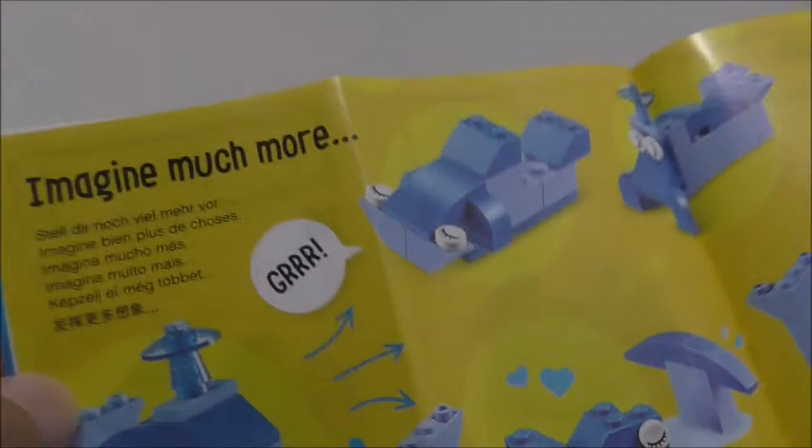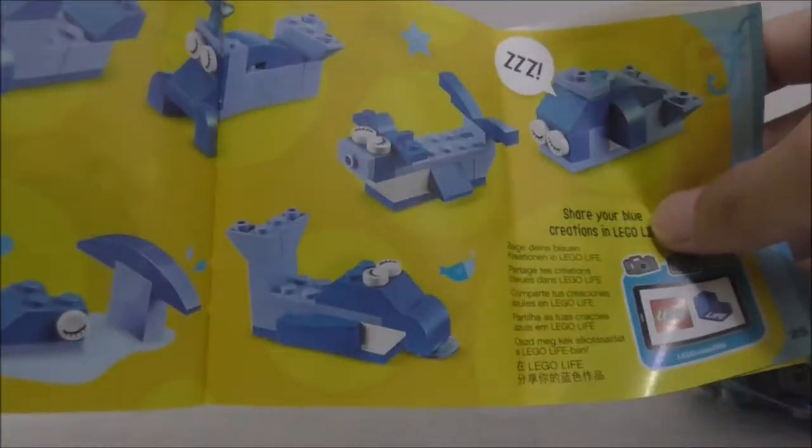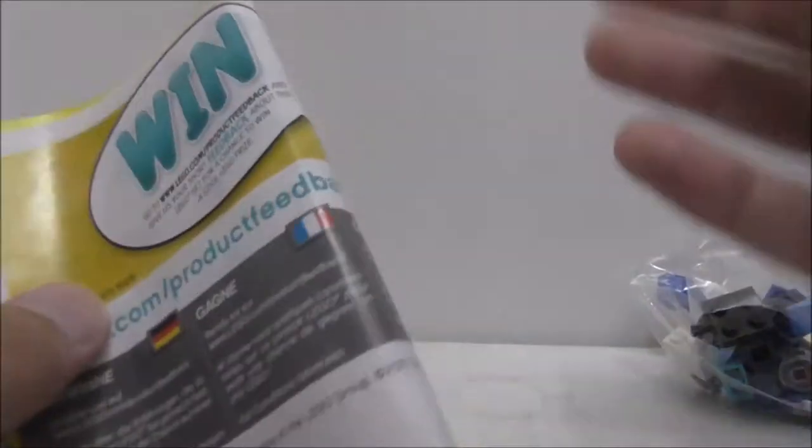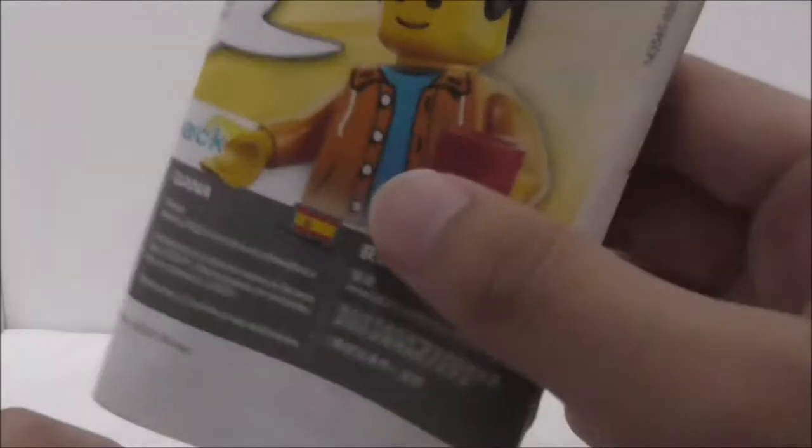The instruction manual is packed with a lot of stuff - it shows you alternate builds, this crane, the bigger sets, base plates, and the parts list with what parts are included in the set.